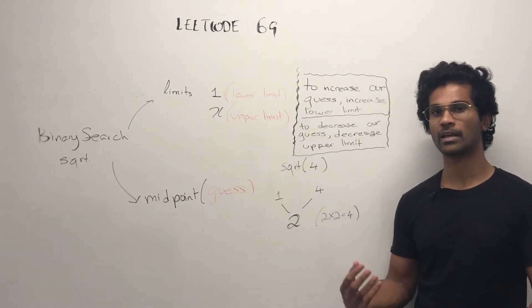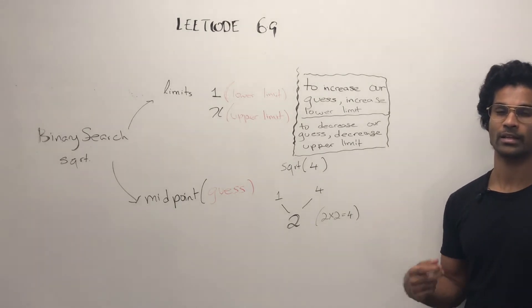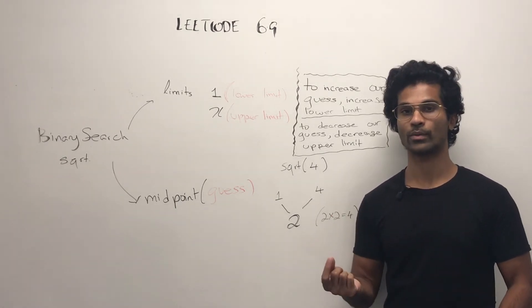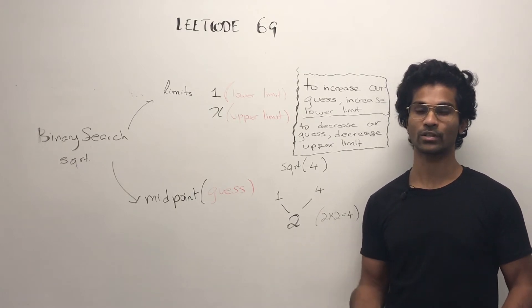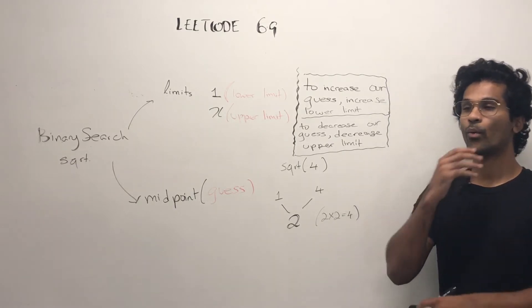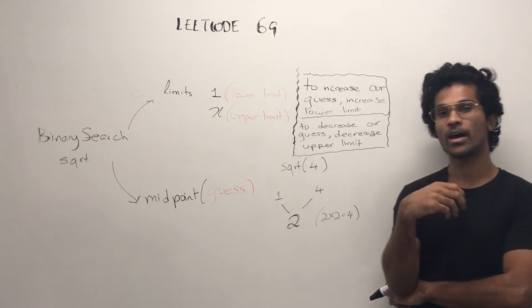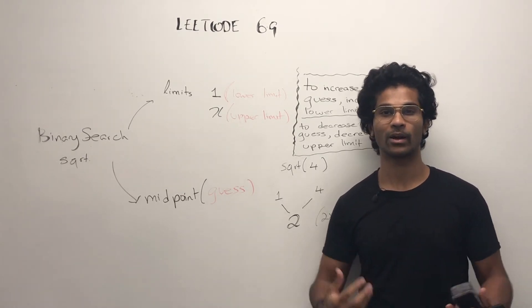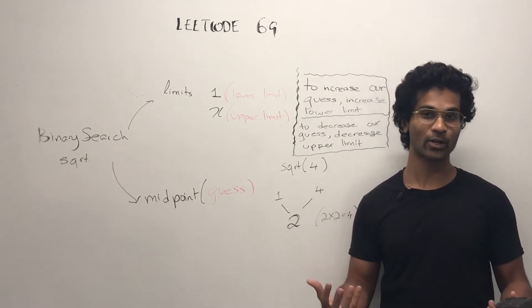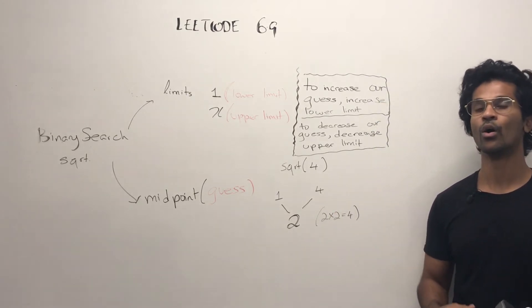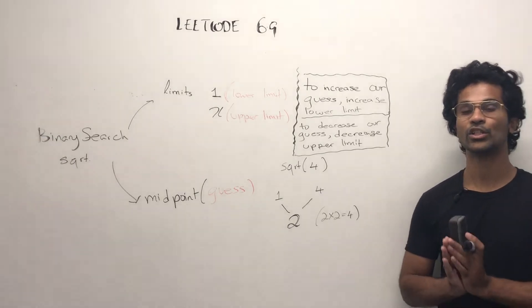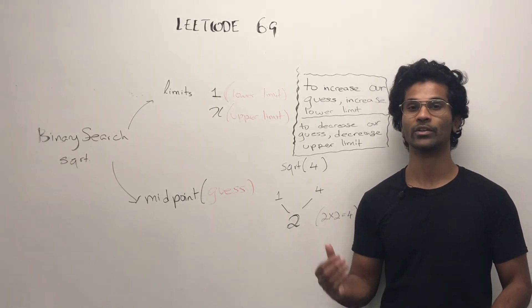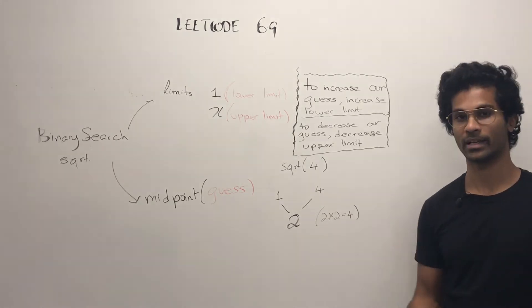But what happens if the square root we need to find is square root of 17? Then the first midpoint we take isn't going to be the best answer. What should we do? We know that our midpoint is our guess, and if we find that our guess is not very accurate or we could do better, then we're going to change our midpoint, which is our guess.